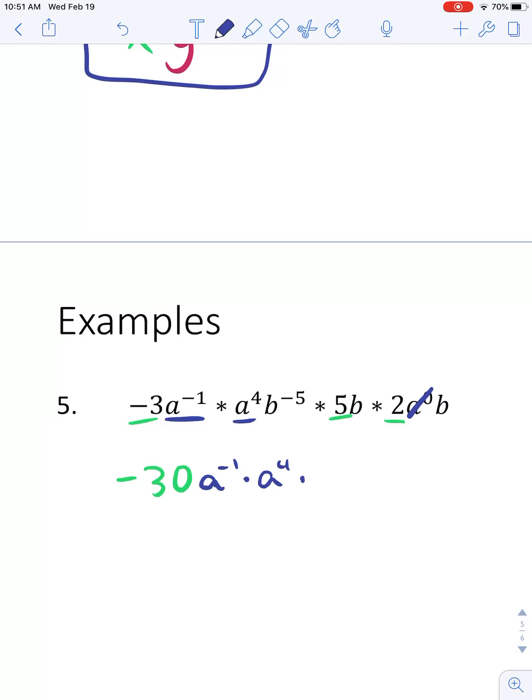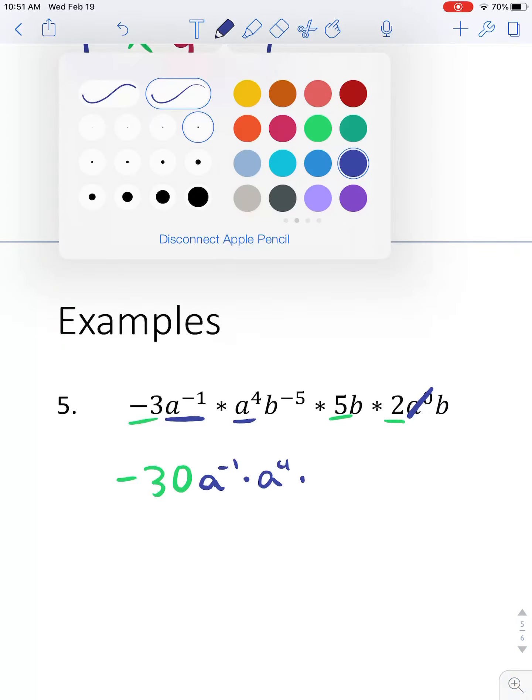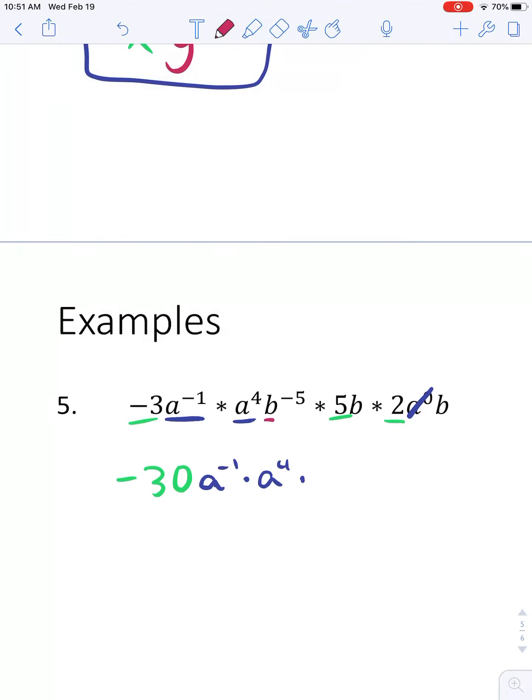So a to the 4th and a to the negative 1st. How about the b's? What b's am I dealing with? b to the negative 5th, b to the 1st. If you don't see an exponent, it's to the 1st. And here's another b to the 1st. So I have b to the negative 5th times b to the 1st times b to the 1st.